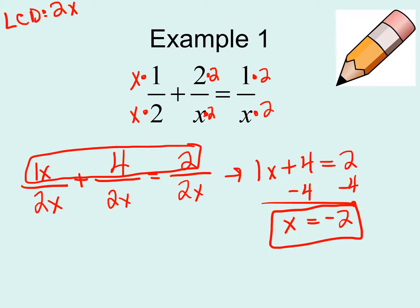If we really wanted to, we could check for extraneous solutions. Substituting x = -2: one-half plus two over negative two is equal to one over negative two, which simplifies to 0.5 plus negative 1 equals negative 0.5. That holds true, so x = negative 2 works.